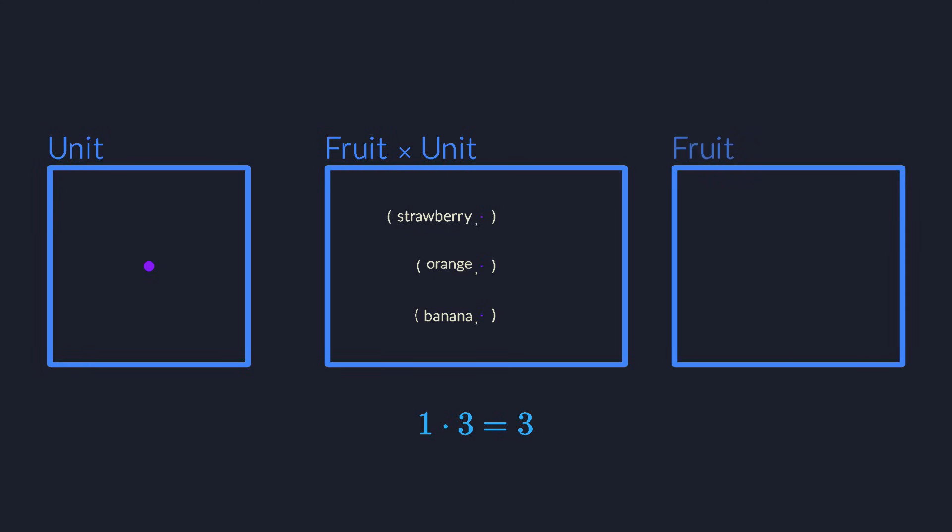We can use this type as the neutral element for multiplication. Take the product of the fruit type with this unit type. It contains three elements, and these are basically still the same as the originals. I mean technically they are all pairs, but the dot really doesn't make any difference. So one times three is three, and we still have pretty much the same type as before, so the unit type serves as the neutral element for products of types.